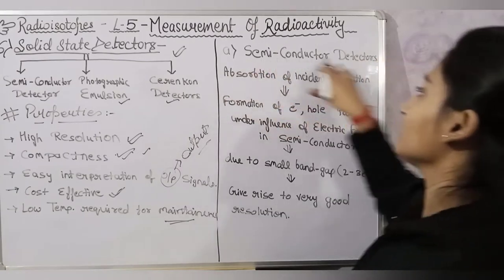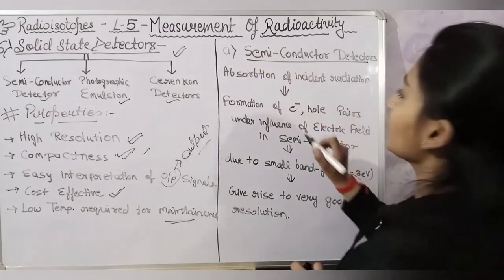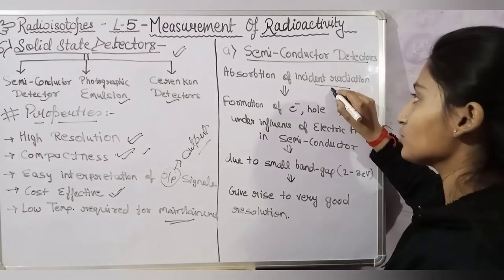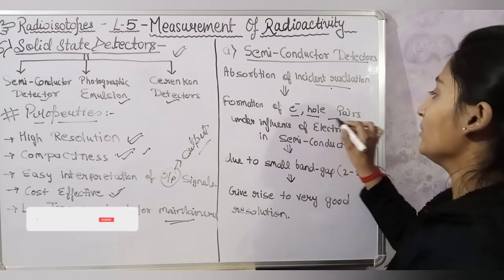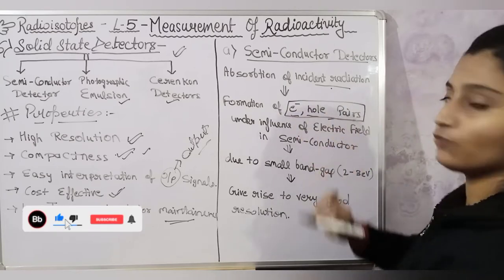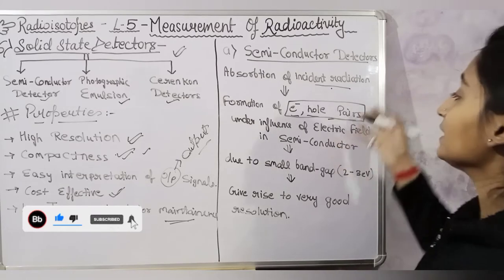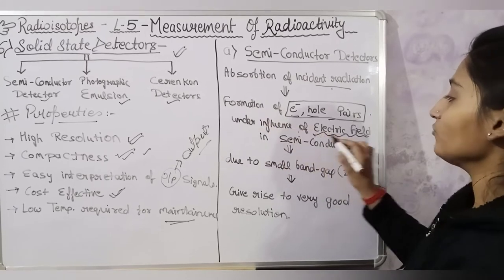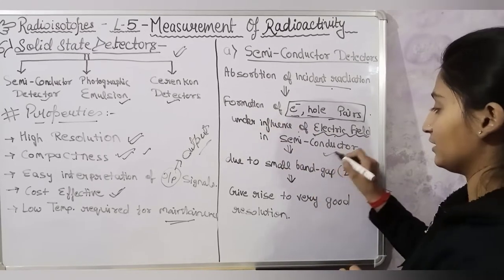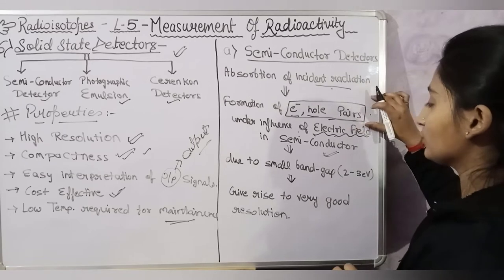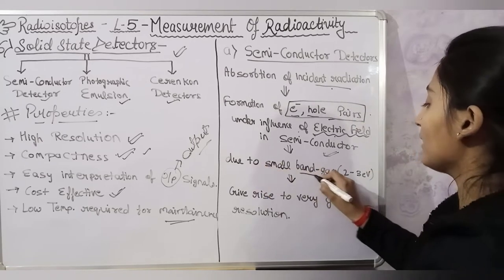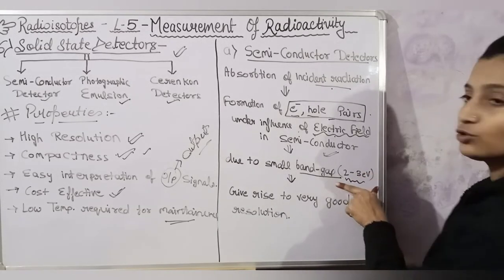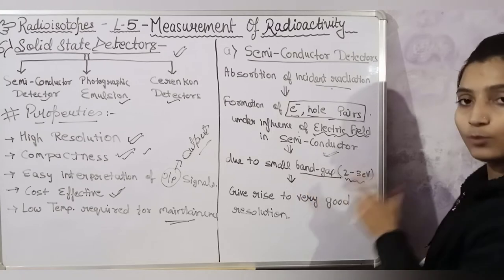We have semiconductor detectors. With semiconductor detectors, first there is radiation absorption. In the presence of the electric field, electrons and hole pairs are formed within the semiconductor. When these pairs are formed, there is a small band gap — very small. This gives very good resolution.